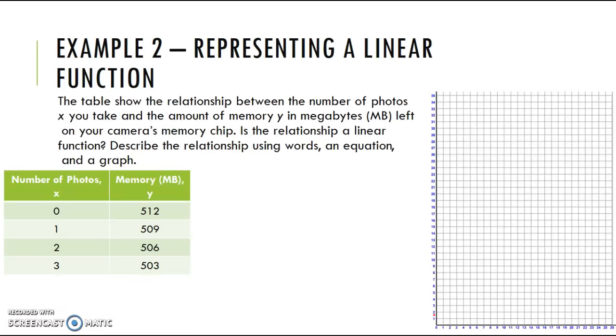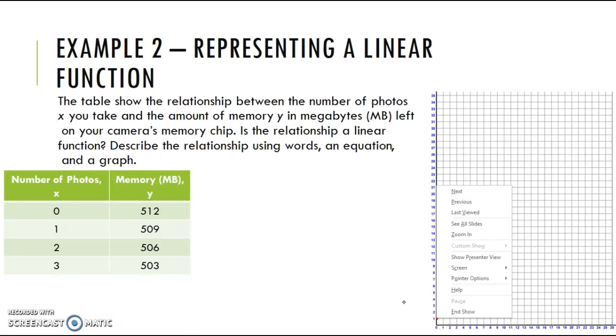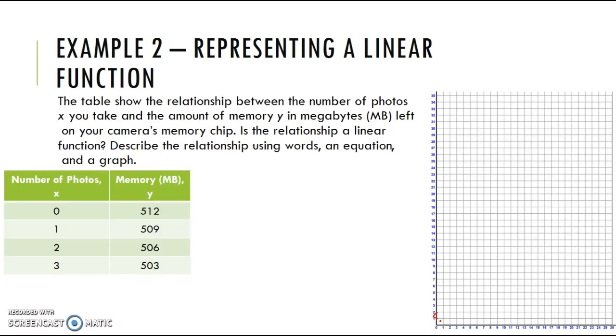We're going to make a break in our graph because I am not graphing all the way to 500 from zero. We're going to start at 501, and this is 502, 503, 504, 505, 506, 507, 508, 509, 510, 511, 512. You can label all of them. This just gives me a better idea, so it makes it easier to graph.